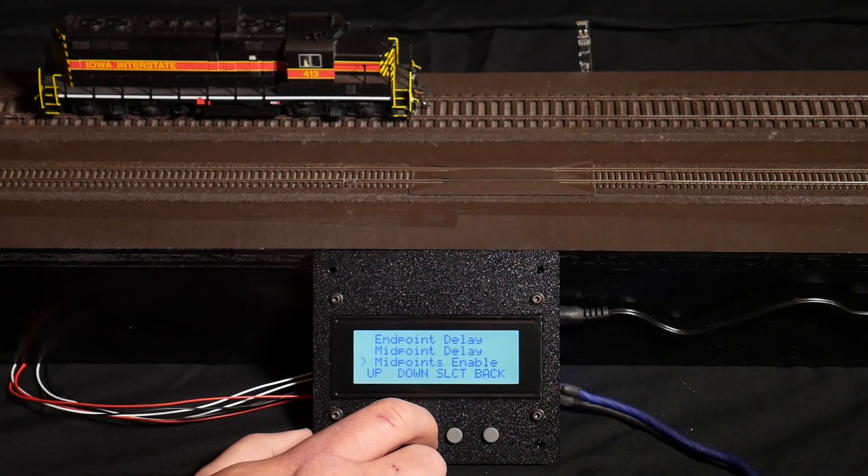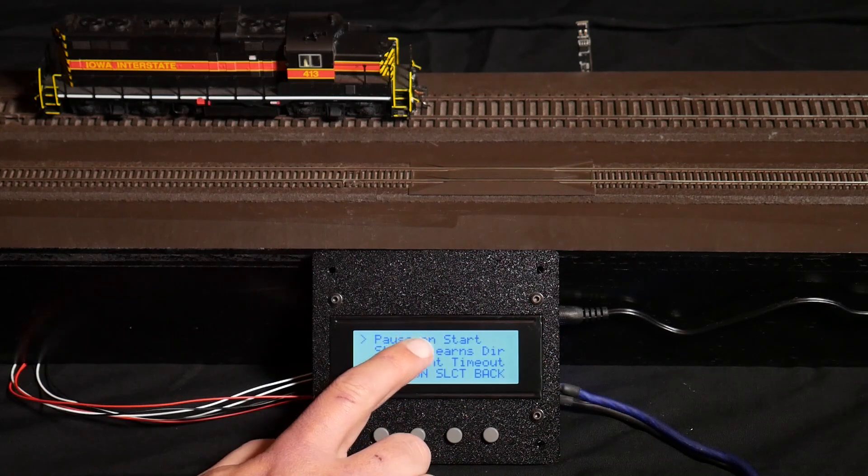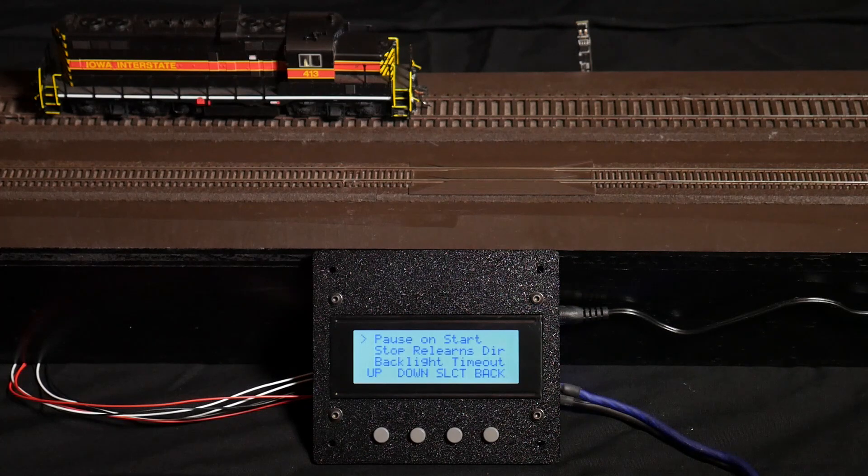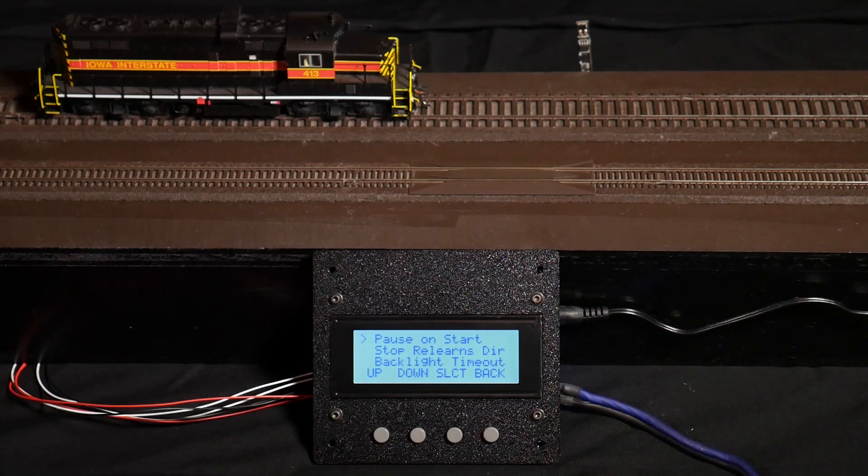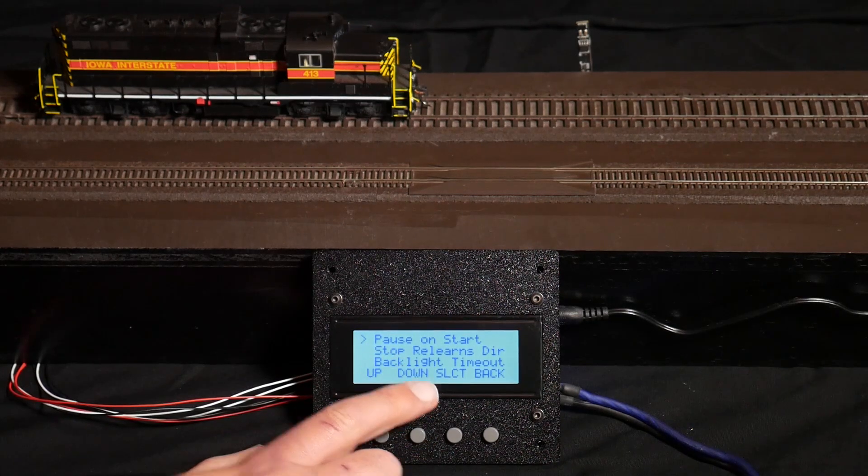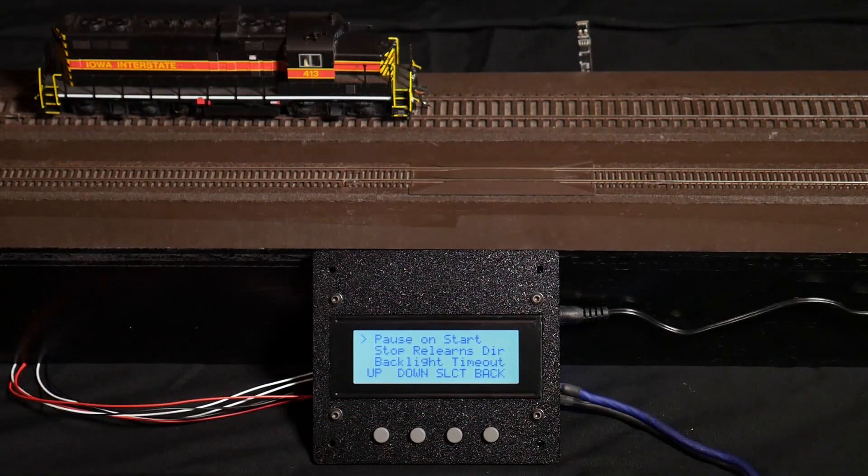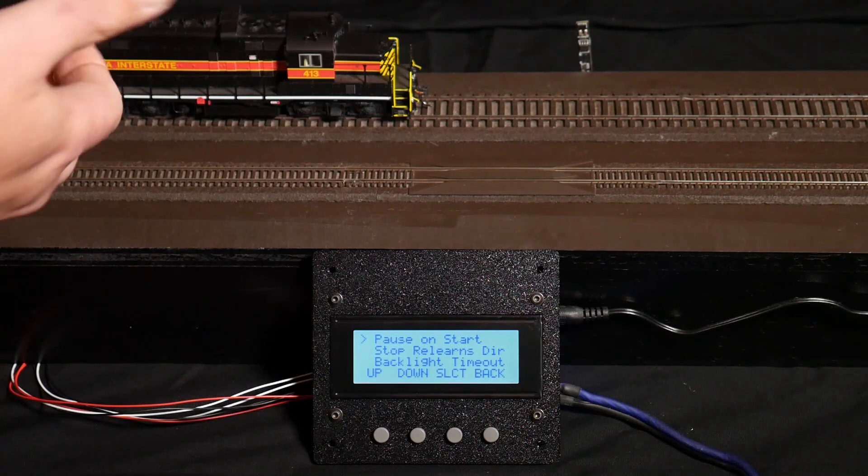You can enable or disable midpoints. You can tell it to pause when it first starts up, so that the locomotive, unlike on this layout, doesn't just start moving when power comes on.